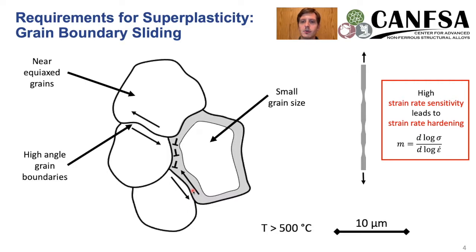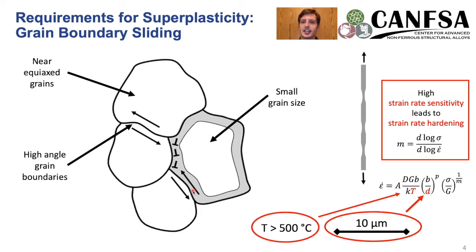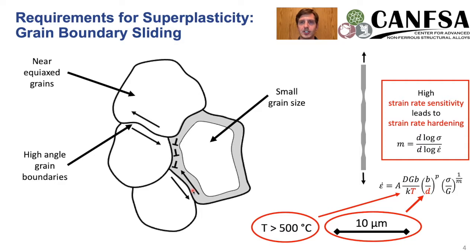For 5083 aluminum, this typically occurs above 500 degrees Celsius for about a 10 micron grain size. There's a well-known equation for steady-state creep that's based on temperature and grain size, and we are hoping to reduce grain size in order to achieve this lower temperature superplasticity.